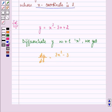Right, now we need to find out the slope at which x-coordinate is 3. So we have dy/dx at x equals 3.